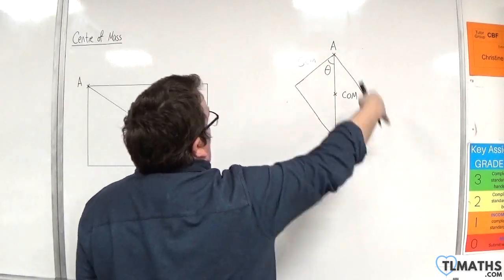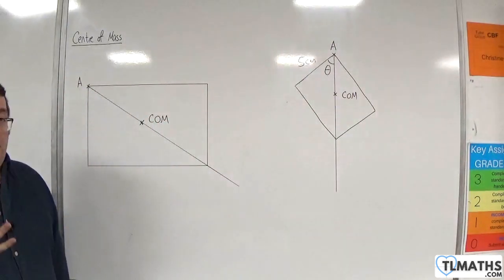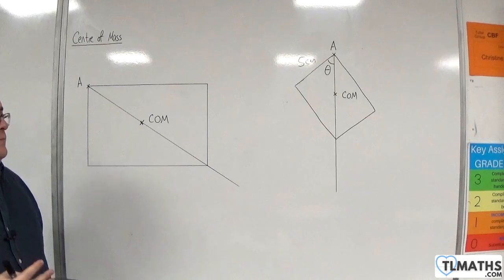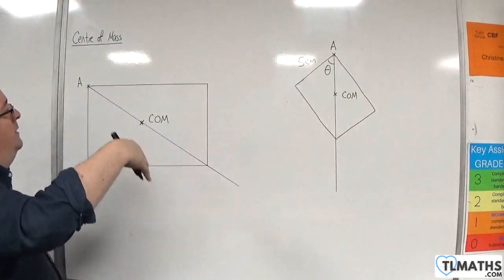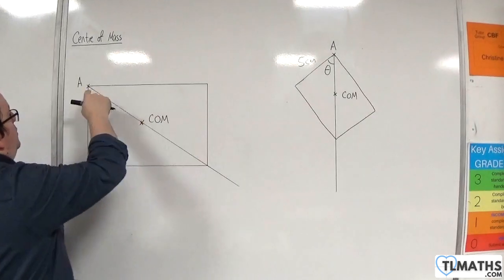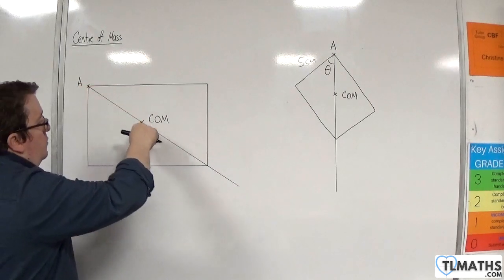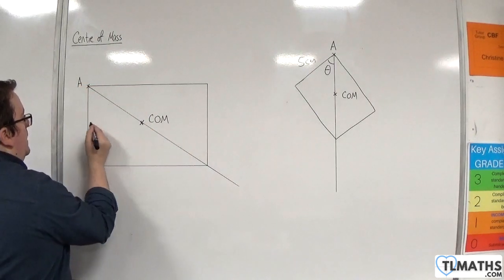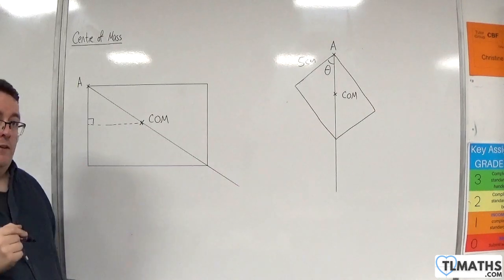But we don't want to have to always draw this diagram, because if this is a compound shape, then that can be really difficult to draw. So we don't want to have to draw it on its side and work through it that way. What we want is to locate the point that you are suspending it at, and then draw a line through the centre of mass.